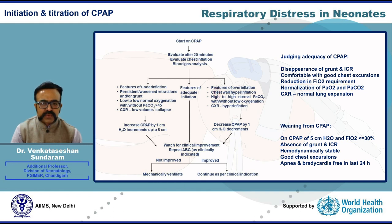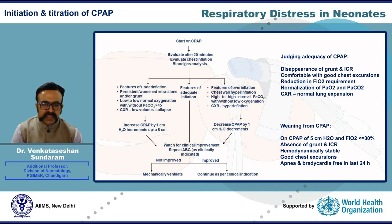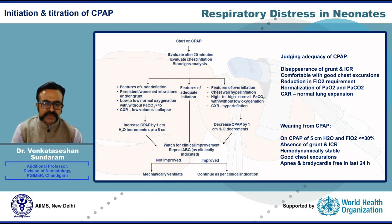CPAP adequacy is judged by disappearance of grunt and intercostal retractions, a comfortable neonate with good chest excursions, reduction in FiO2 requirement, normalization of PaO2 and PaCO2, and normal lung expansion on chest X-ray. For weaning, decrease pressures by 1 cm H2O decrements and FiO2 by 5% at a time. At 5 cm H2O and less than 30% FiO2, in the absence of grunt, retractions, apnea, or bradycardia in the last 24 hours, CPAP may be removed. Nasal interface of any kind can cause nasal injuries, making appropriate nursing care crucial.